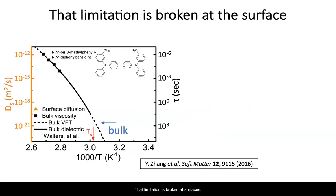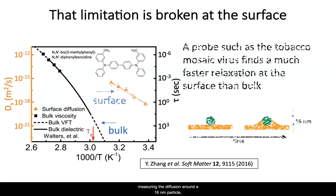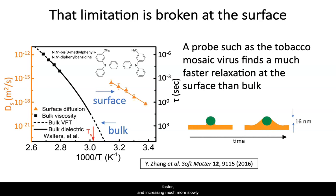That limitation is broken at surfaces. This graph shows the bulk relaxation measured from molecular glass diphenylbenzody. You can see the relaxation time increasing very rapidly below Tg. But at the surface, which we can probe by measuring the diffusion around a 16 nanometer particle, one finds relaxation times many orders of magnitude faster and increasing much more slowly.